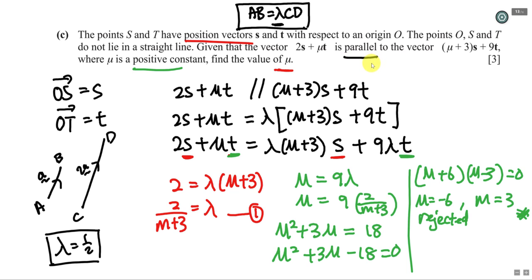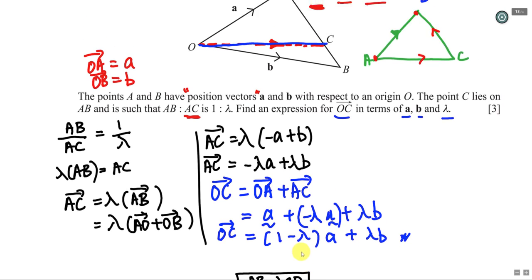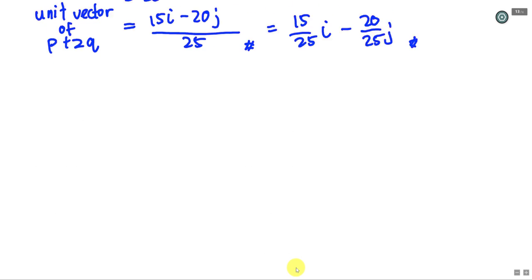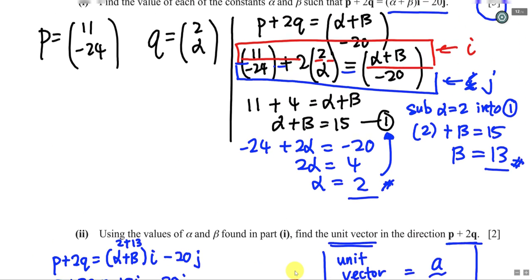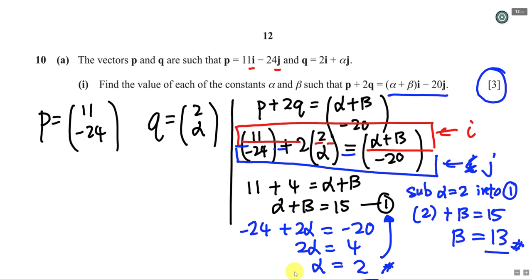Since m is a positive constant, I reject m = -6, leaving m = 3. This question tests whether you understand what 'parallel' means and can write the λ equation, then compare the coefficients of s and t to solve. I hope this video helps you understand vectors better — it's one of the easier scoring topics, so I hope you score well. Thanks for watching!